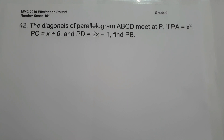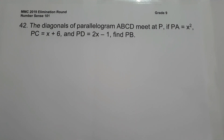On number 42, the diagonals of parallelogram ABCD meet at P. If PA equals x squared, PC is x plus 6, and PD is 2x minus 1, we are going to find the measure of PB. To find the measure of PB, let us illustrate the given.